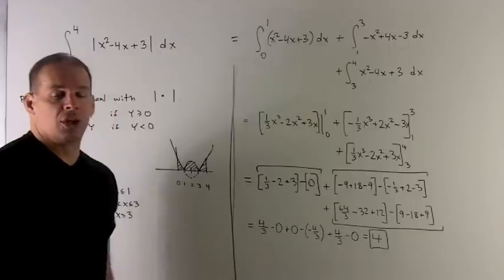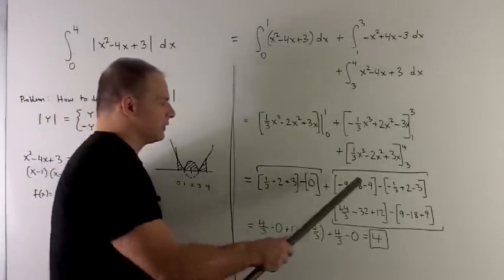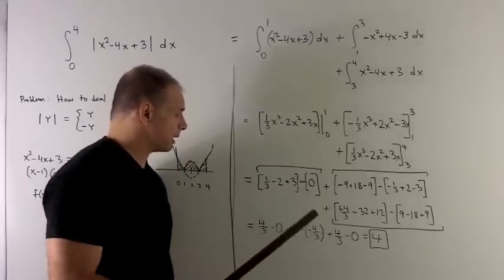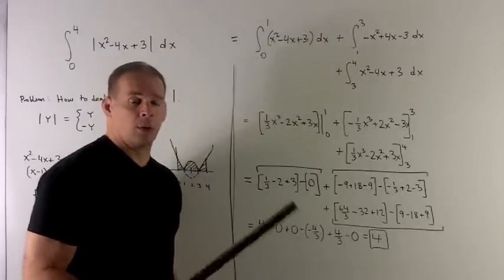Now it's just crunching the numbers until you get to the end. When I crunch each of these, we wind up with 4 thirds plus 4 thirds plus 4 thirds. So 3 times 4 thirds gives me a 4, and we're done.